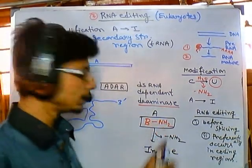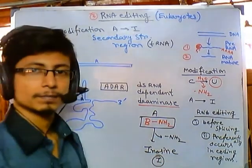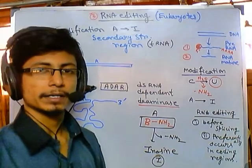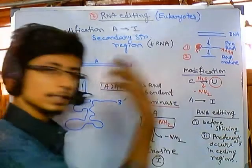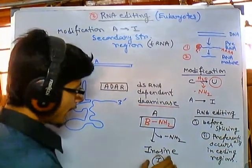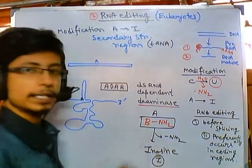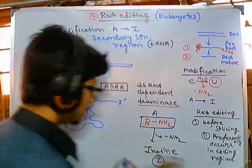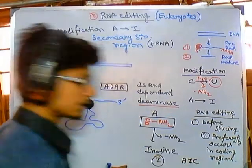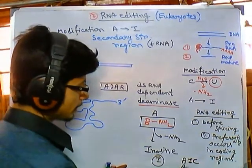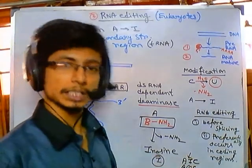Deamination of adenine leads to the formation of inosine. Inosine is a type of base that can pair with all four other bases — it has versatility in bond creation. However, inosine will be read as guanine during translation. So if the codon sequence contains inosine, for example A-I-C, it will be read as A-G-C, because I denotes G during protein translation.